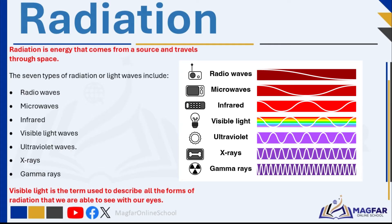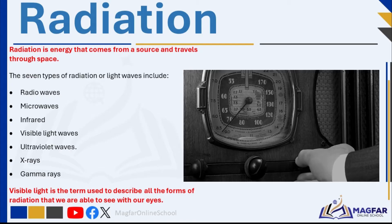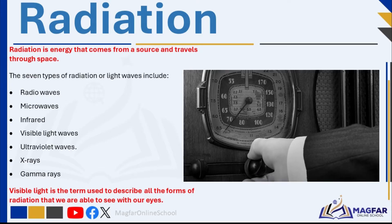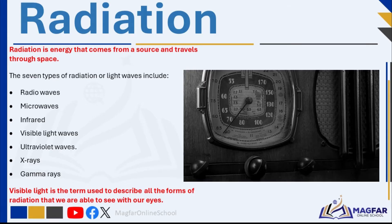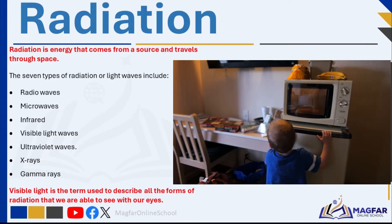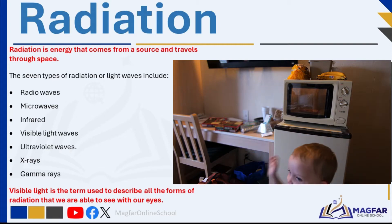The seven types of radiation or light waves include: Radio waves, which have the lowest energy and are used to get radio signals from the radio station to the radio, and also used in remote controls for garages and gates. Microwaves are used in a microwave oven to heat up food.